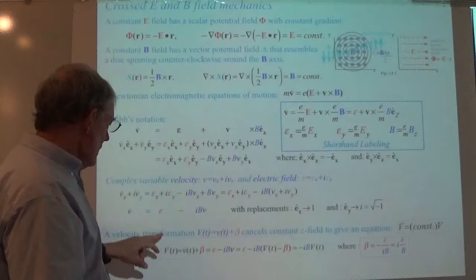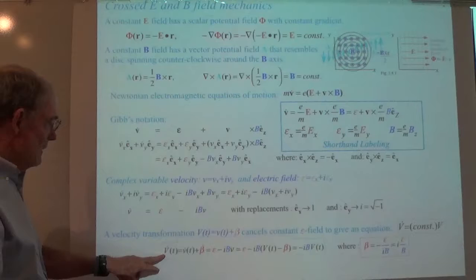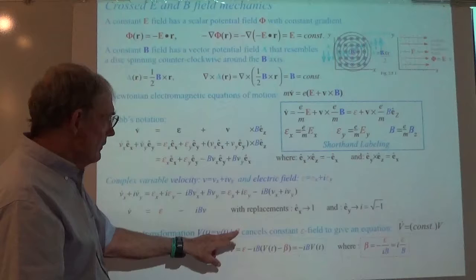V-dot: you implicitly differentiate the big V term and that gives you the v-dot relationship. This is big V, and I've added this extra velocity to it.